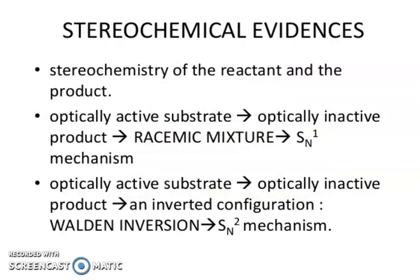Now, stereochemical evidence. The stereochemistry of the reactant and the product can reveal the mechanism. An optically active substrate giving an optically inactive product as a racemic mixture indicates an SN1 mechanism. An optically active substrate giving an optically active product with an inverted configuration indicates an SN2 mechanism.